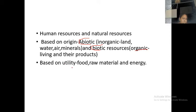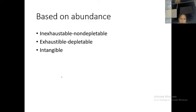But based on continual utility, we can classify resources into renewable and non-renewable resources. Now you have another classification — that is based upon abundance. It can be inexhaustible, exhaustible, and intangible.